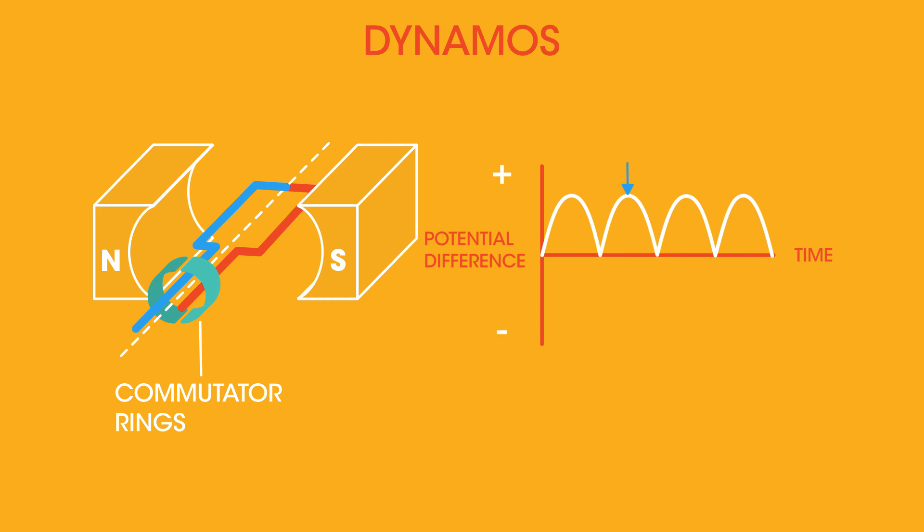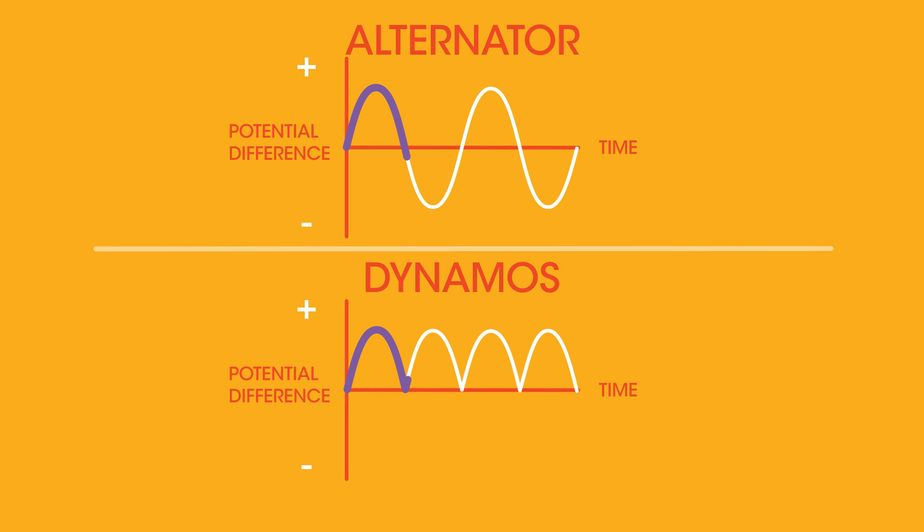The direction of the potential difference and current do not change in dynamos, hence the bouncy graph that always stays positive. This is what one complete rotation looks like on each potential difference graph.